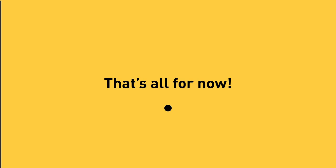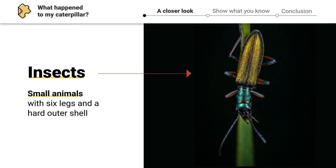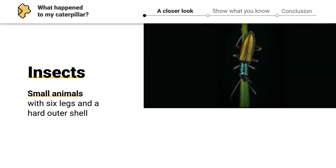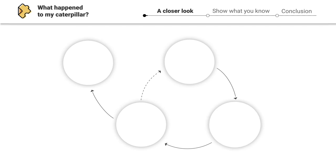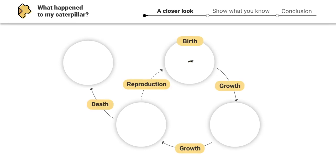To start investigating, let's take a closer look. Over their lifetime, insects like caterpillars change and grow. Insects are small animals with six legs, a hard outer shell — things like beetles, flies, or cockroaches. Insects' lives begin at birth, where they hatch from small, soft eggs. The baby insect is called a larva.